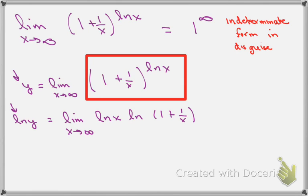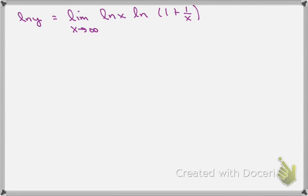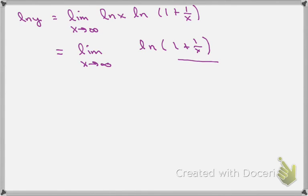That's still not a ratio, so we're going to have to do one more algebra trick. I'm going to configure the right-hand side so I get something that looks like either infinity over infinity or 0 over 0. So I'll write this as the limit as x goes to infinity, with the numerator being the natural log of (1 + 1/x).